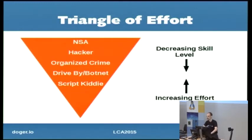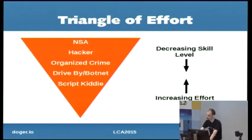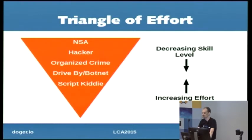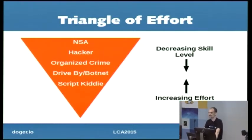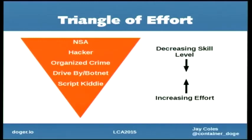But higher-level attackers — organized crime, general activists, and NSA-level or government threats — they've got a lot more skill and a lot more time and effort they can put into attacking you. They tend to want to move vertically, so they're more than willing to attack a different customer on your hardware and then use that to attack other customers on your kit. The security frameworks I'll be showing off here today are helpful for preventing that.